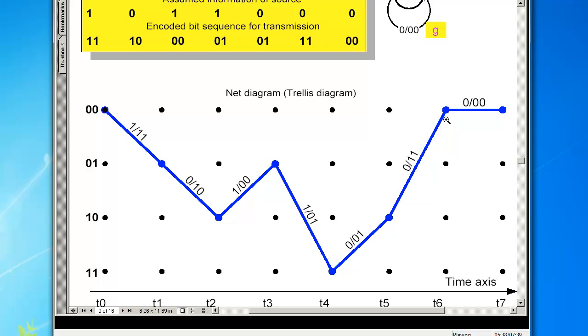The above example leads to a specific coded bit sequence at the output. The trellis diagram shows the path for this signal.